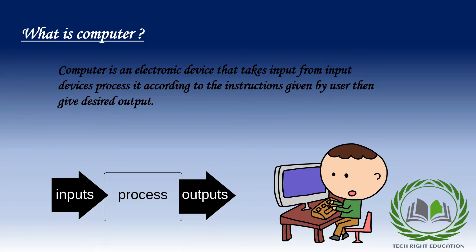Here, desired output means the output which the user wants to see. If the computer does not give the desired output, that means the instruction given by us was wrong, or our computer is behaving abnormally. We can also understand the definition of the computer with the help of a diagram — the computer takes input, then processes it, and after processing, gives the desired output.